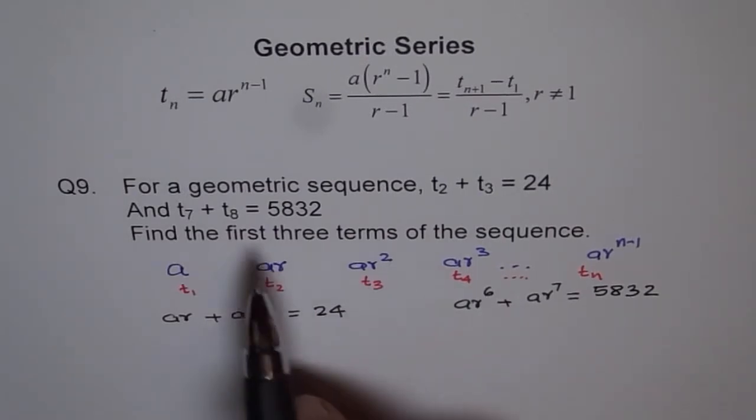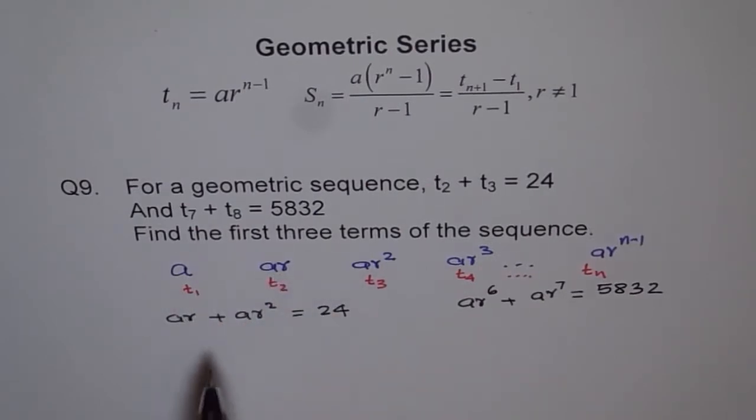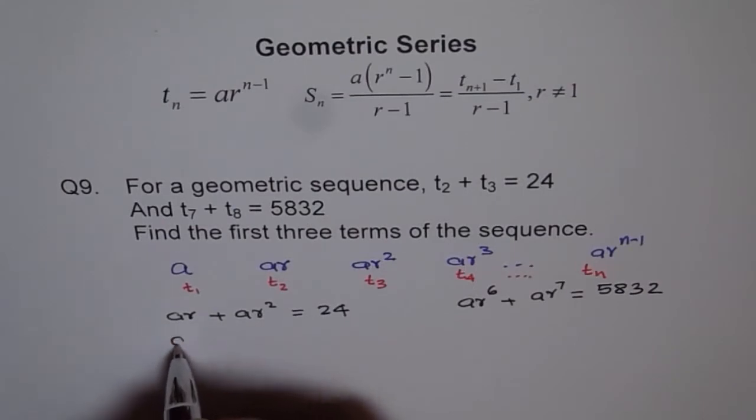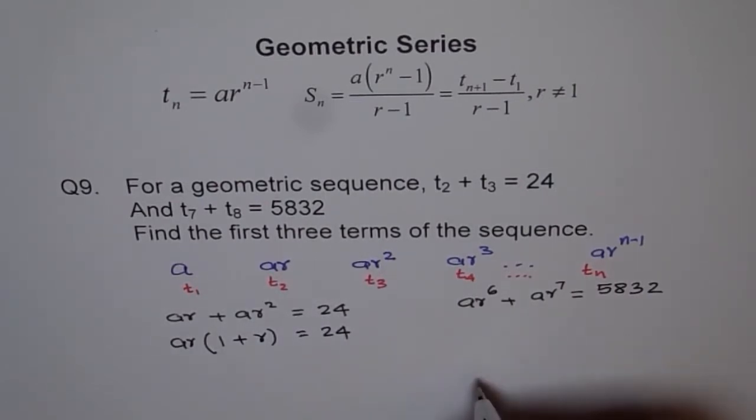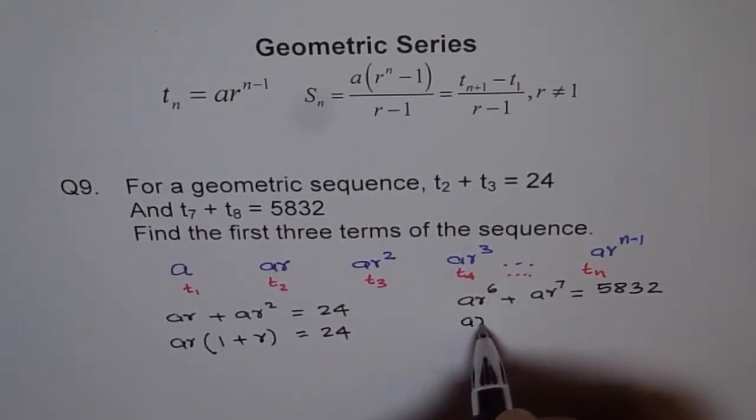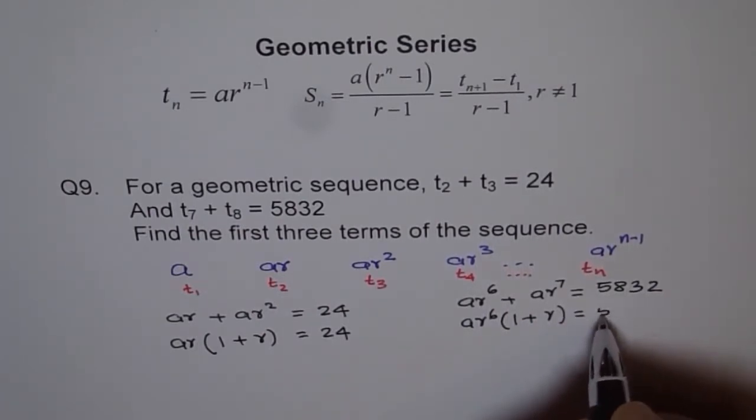This is what is given to you. Now, what do we need to find? First three terms, that means a and r. Now, as you can see, we can factor out a r from here. If I do so, I get 1 plus r, which is equals to 24. I'll do the same here. What can I factor here? a r to the power of 6 and I get 1 plus r equals to 5832.